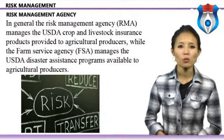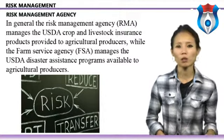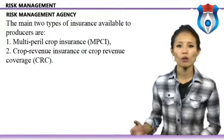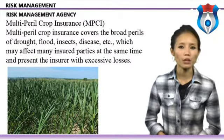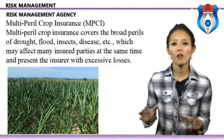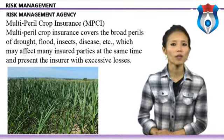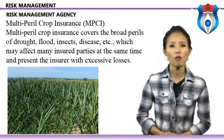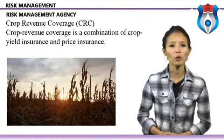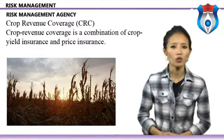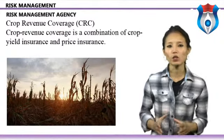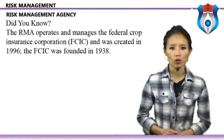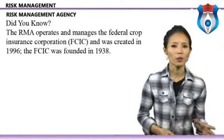The RMA assists in the development and underwriting of crop insurance programs, which are sold by private insurance companies with premium subsidies provided to producers. The FSA programs are developed and delivered directly by the agency. The two main types of insurance are: multi-peril crop insurance (MPCI), which covers broad perils such as drought, flood, insects, and disease bundled in a single policy; and crop revenue coverage (CRC), which combines crop yield insurance and price insurance, paying an indemnity if actual yield times cash settlement price falls below the guarantee.